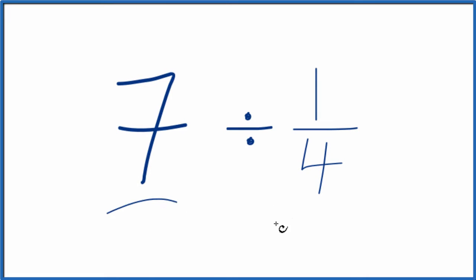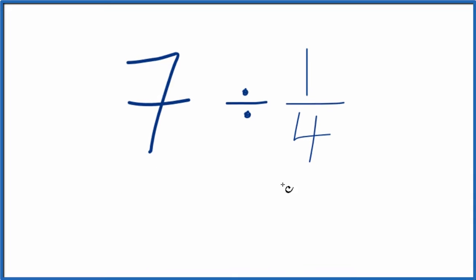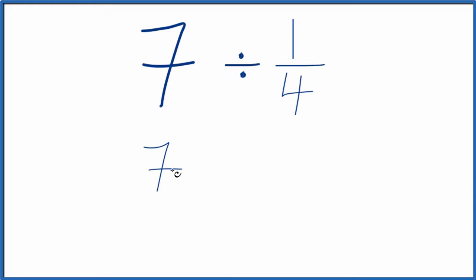Here's how you divide 7 by 1 fourth. So first off, let's call this 7 over 1. It's still 7, we're just dividing by 1, but having this in fraction form is helpful.